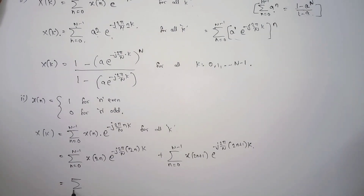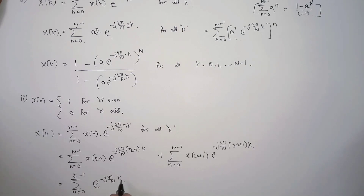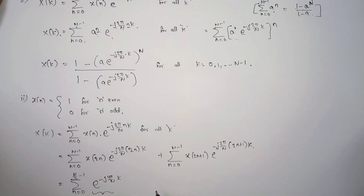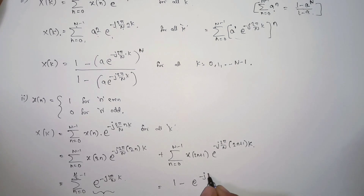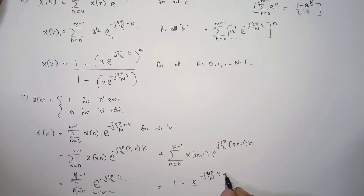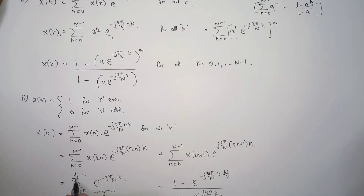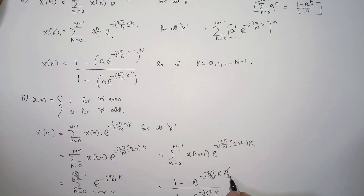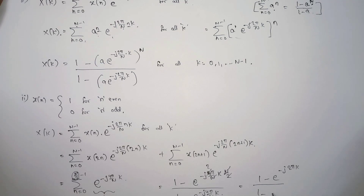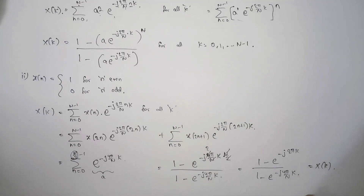Simplifying, we get a summation from 0 to N/2 minus 1 of e to the power of minus j 4π/N times k. This equation looks similar to the previous formula, so we treat e to the power of minus j 4π/N times k as the term a, and apply the same geometric series result. The upper limit here is N/2.